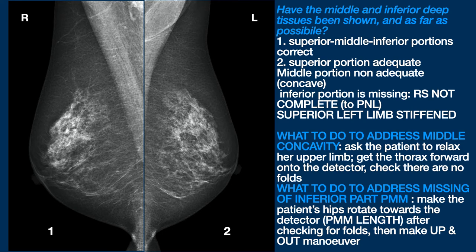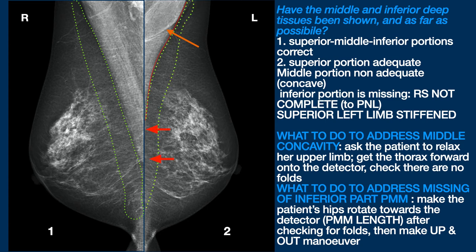Take a look now at these two images of the same patient. In the first, the right MLO, the muscle is correct. In the second one, the left MLO, the superior portion is adequate and correct. There is a fold, which is proof of patient stiffening. The central part is not correct, it is concave. And the muscle disappears before the PNL, meaning that the retromammary space on the right is complete, but not on the left MLO — part of it is missing. Had there been a lesion, it would have been lost.